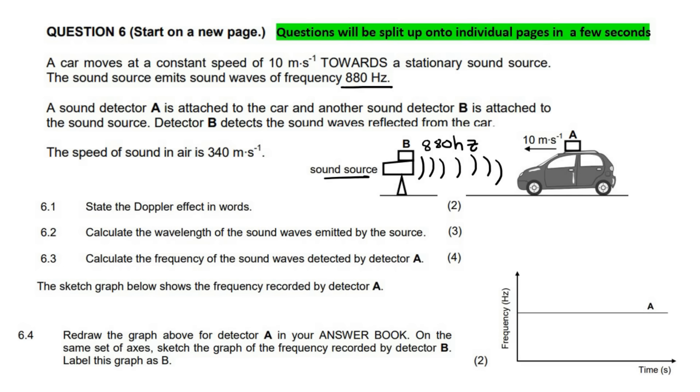A sound detector is attached on a car. By the way, I have one of these on my car - that was a joke, that would be quite stupid. A sound detector is attached to the car, and another sound detector B is attached to the sound source. Detector B detects the sound waves reflected from the car. This is quite interesting. This is not the typical way Doppler effect works. The speed of sound is 340.